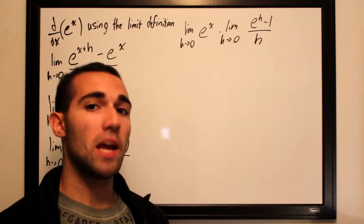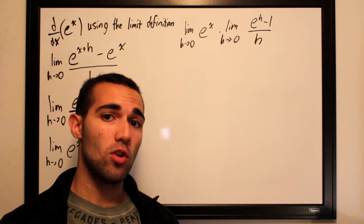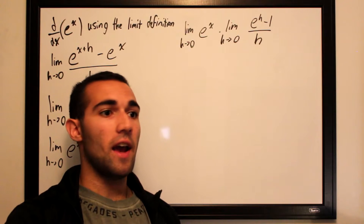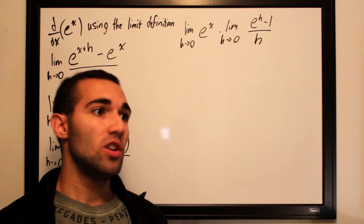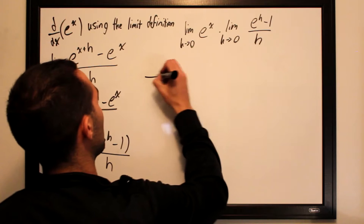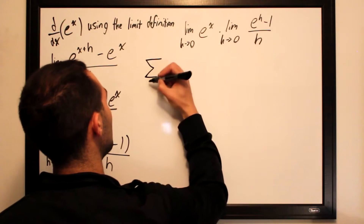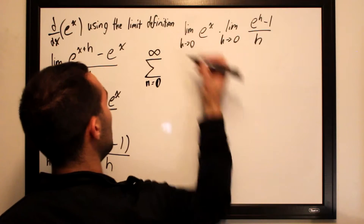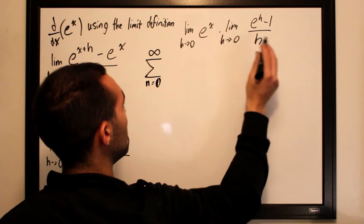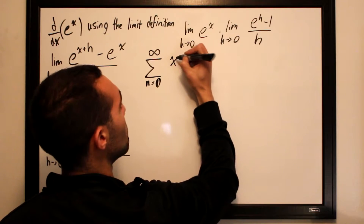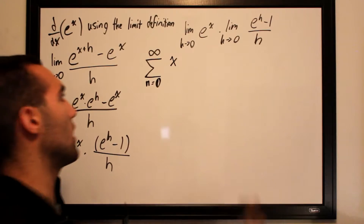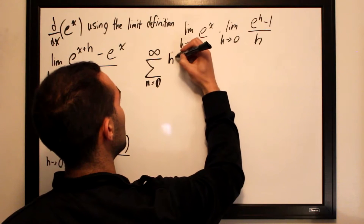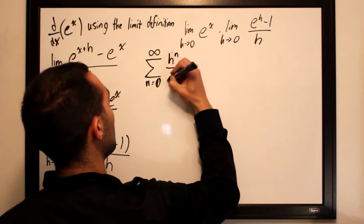Functions can be represented as series. If you know a bit of calculus 2, every function can be represented as a series, and the series for e to the h looks like this: sigma from n equals 0 to infinity of h to the n divided by n factorial.